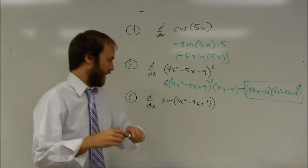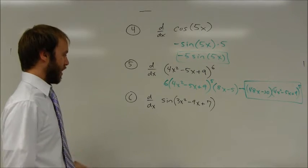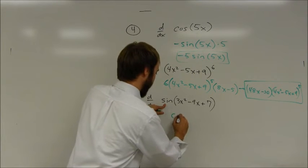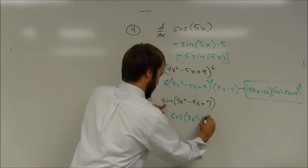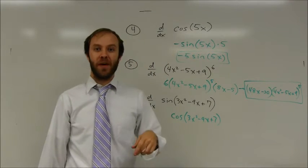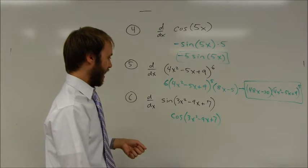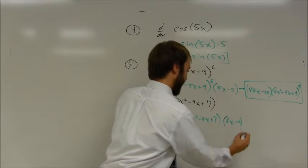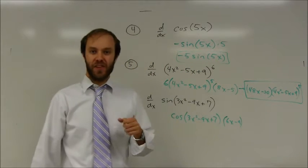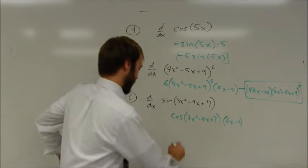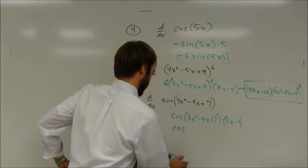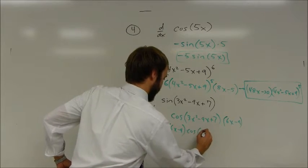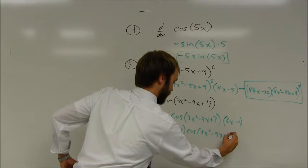My sixth example: once again I'm taking the sine of an inside function. Derivative of sine is cosine of the same thing. Now I have to multiply by the derivative of the inside function, which is going to be 6x minus 9. You may want to move this out in front so it's clear you're not taking the cosine of this entire statement. The result is the quantity 6x minus 9 times the cosine of 3x squared minus 9x plus 7.